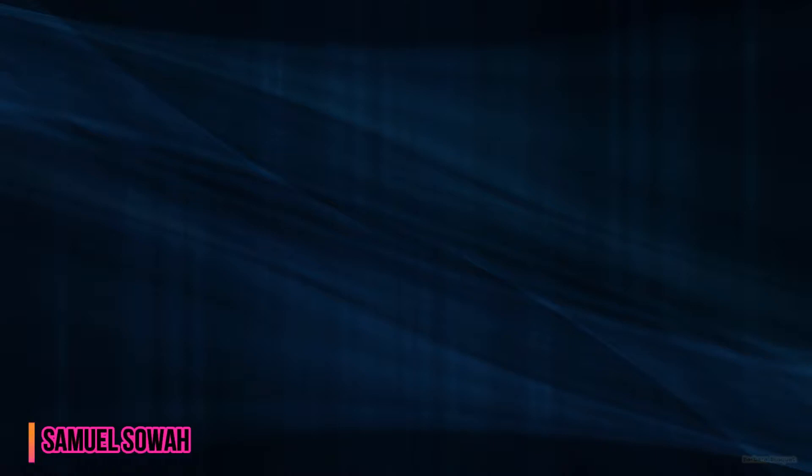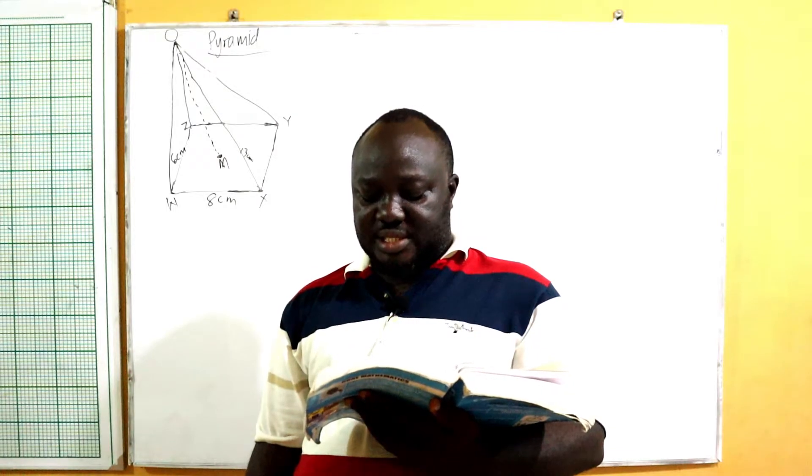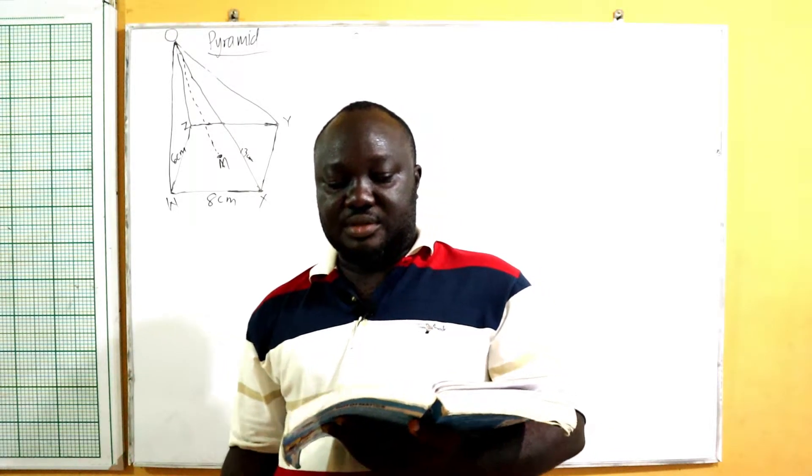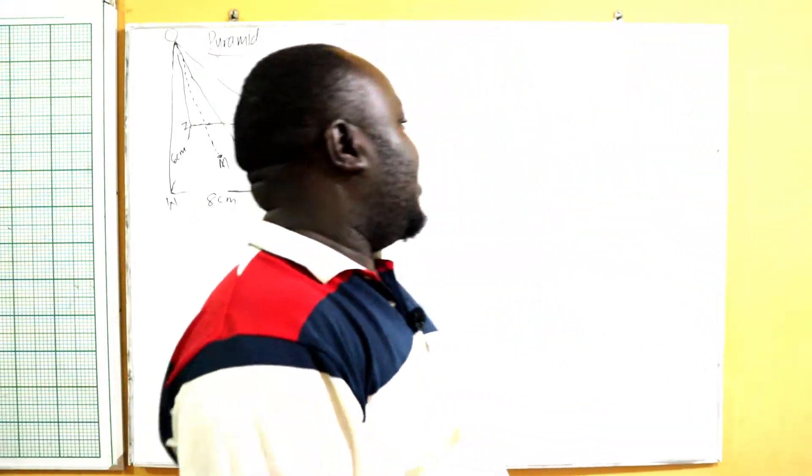We are going to continue the lesson by solving the above question. The diagram shows a right pyramid with a rectangular base WXYZ and vertex O. The magnitude of WX is 8 centimeters, ZW is 6 centimeters, and OX is 13 centimeters. Calculate: (a) the height of the pyramid, (b) the value of angle OXZ correct to the nearest degree, and (c) the volume of the pyramid.